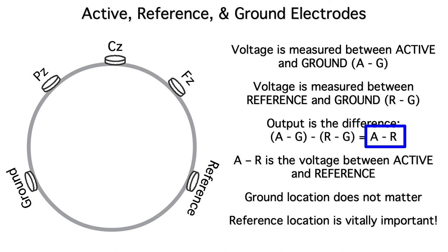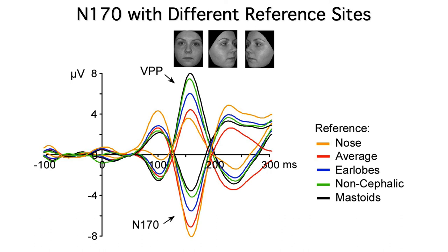Remember, after re-referencing, our voltage is A minus R. Here's what the N170 component looks like with different references. The reference has a big impact on N170 amplitude, and the N170 even reverses in polarity with some references.